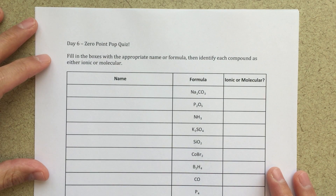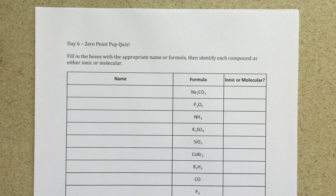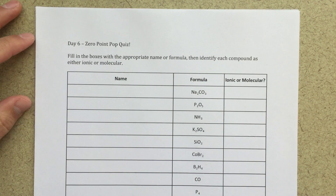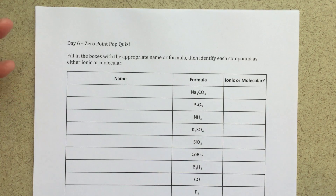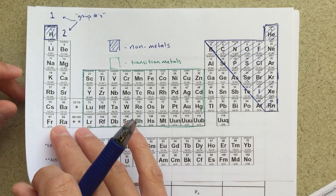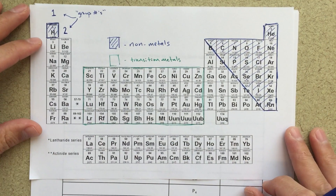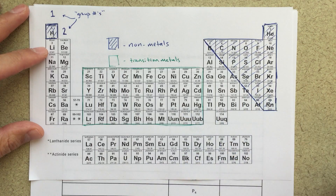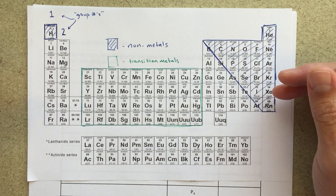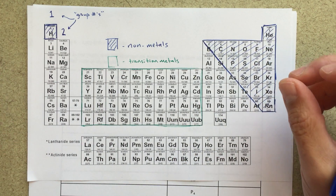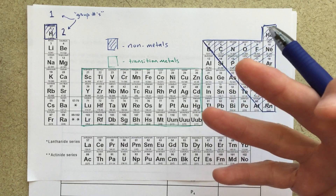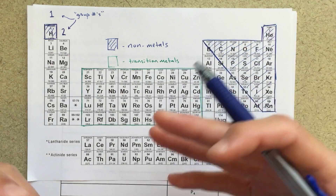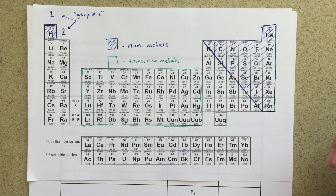Alright class, this is a video that's going to talk about naming and how we name different chemical compounds. Before we get going with this, the first thing I want to talk about is the periodic table. I've highlighted a few things, and you really have to have a good grasp of these before you can even begin the naming process.